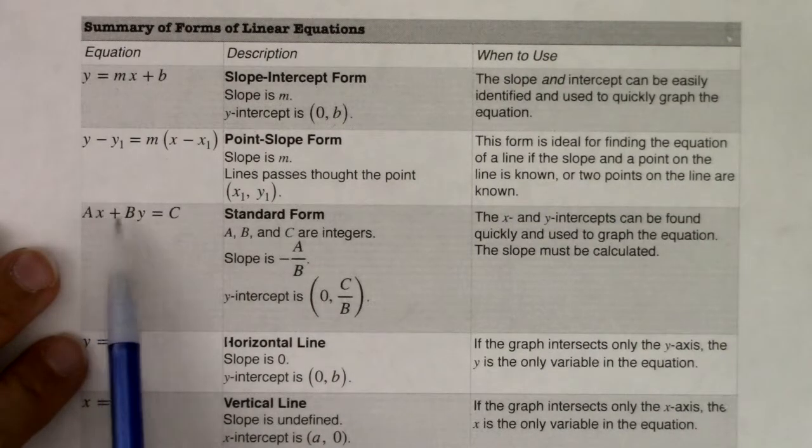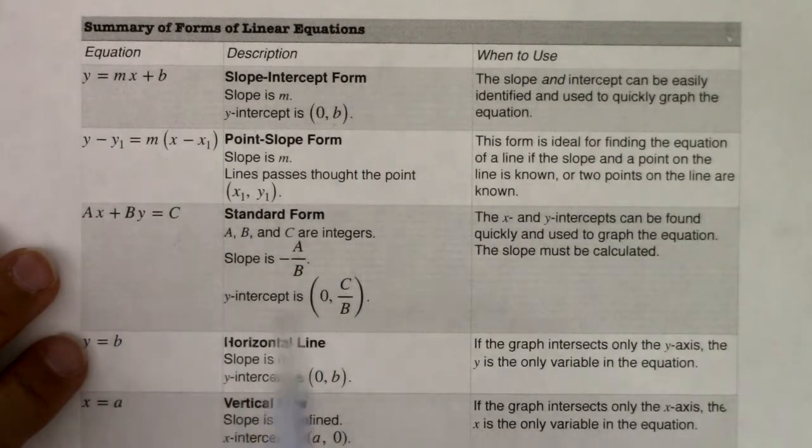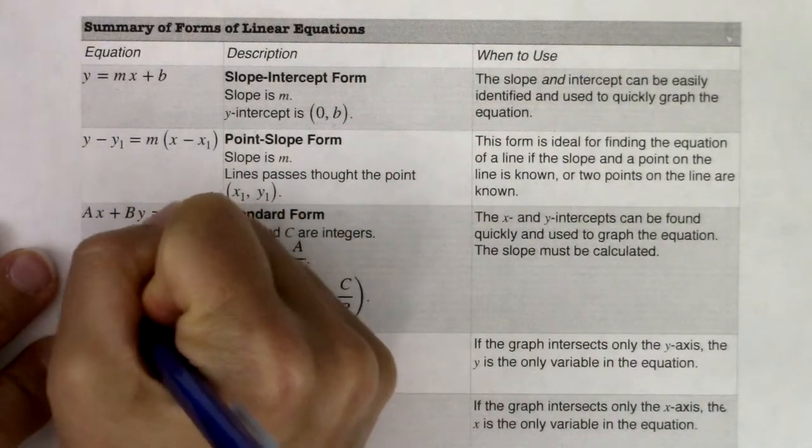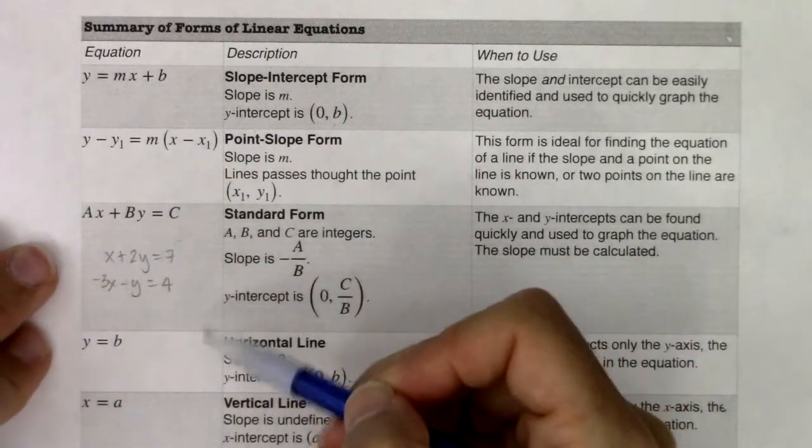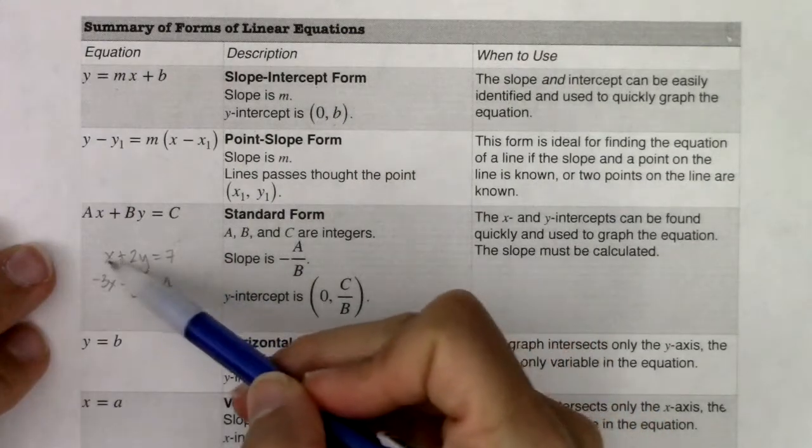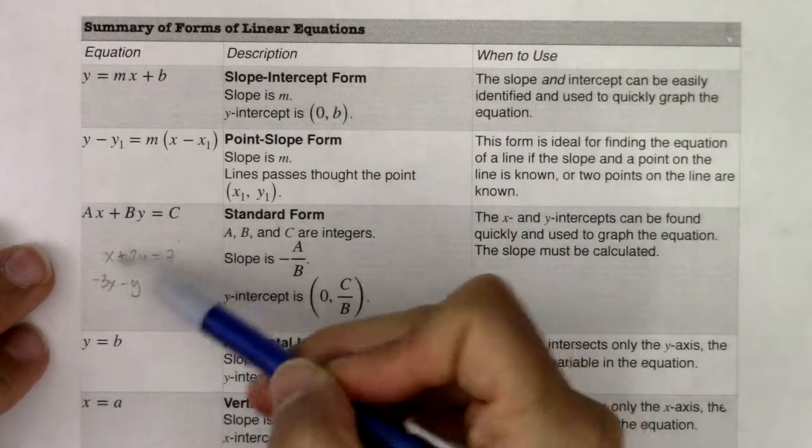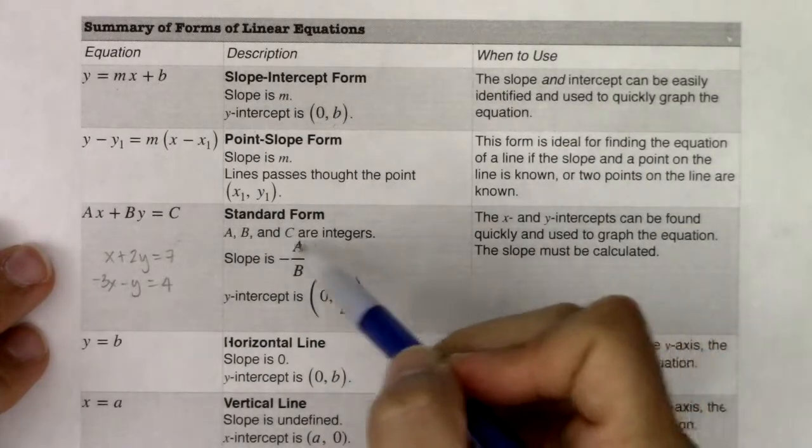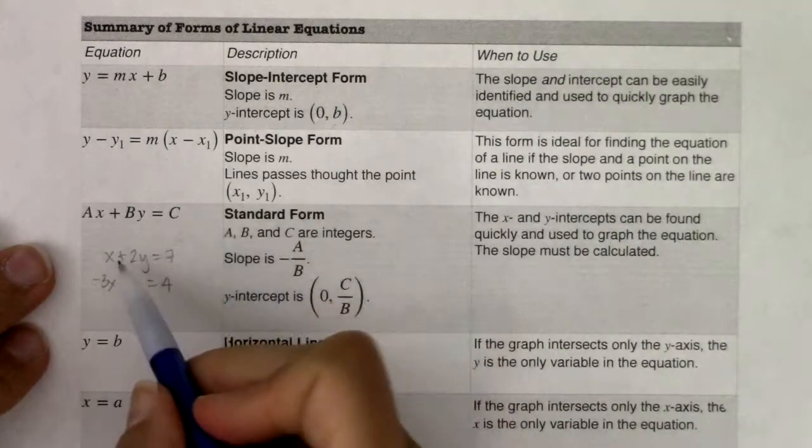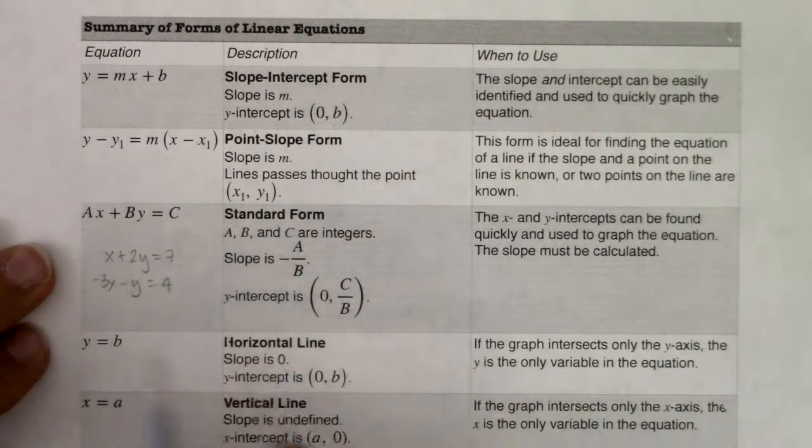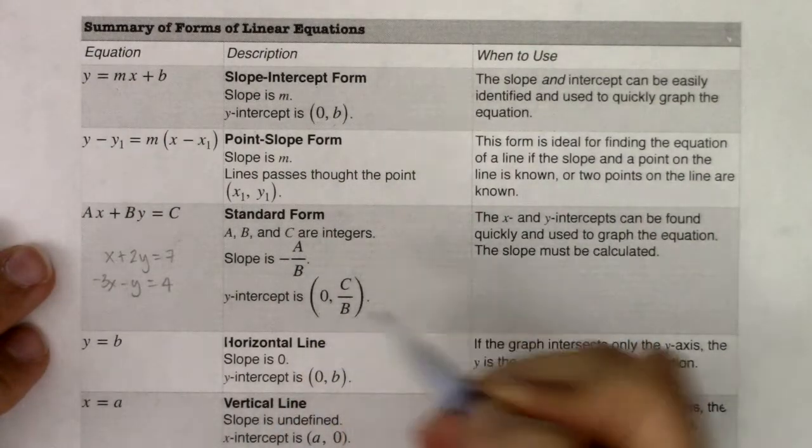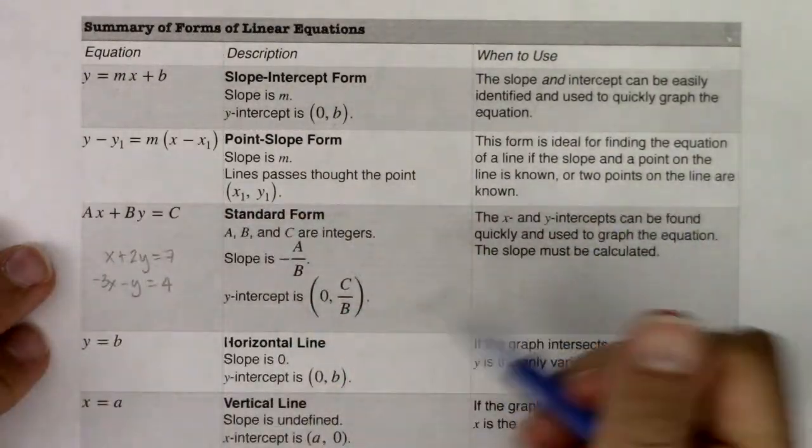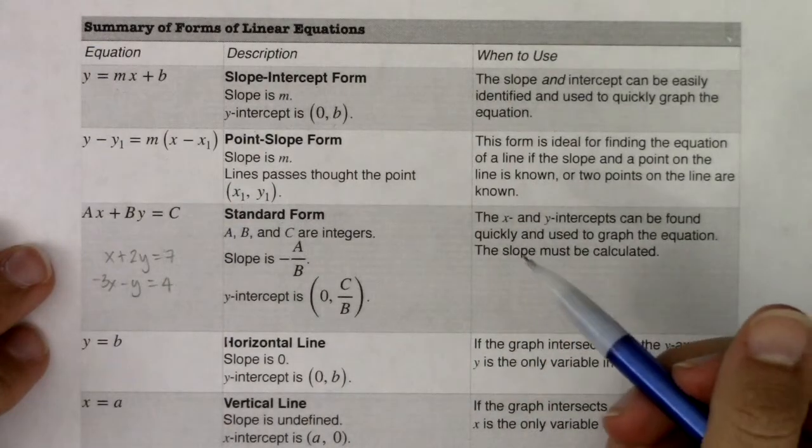You use standard form, this Ax plus By equaling C. You tend to use this when you have systems of equations. So maybe you remember solving problems like x plus 2y equals 7 and -3x minus y equals 4. And you did that either through substitution or linear combinations. But that's when your equations were in standard form. That's the most common use of standard form. But you can use it any time you want. A, B, and C have to be integers, and they have to be prime with respect to each other. So what I mean by that is you wouldn't have a 2, 4, and a 6 because you could just simplify that. The slope is the ratio -A over B. The y-intercept is 0, C over B. And if you can find the x and y-intercept pretty easily, then you can use those to graph the equation, and you would still have to calculate the slope.